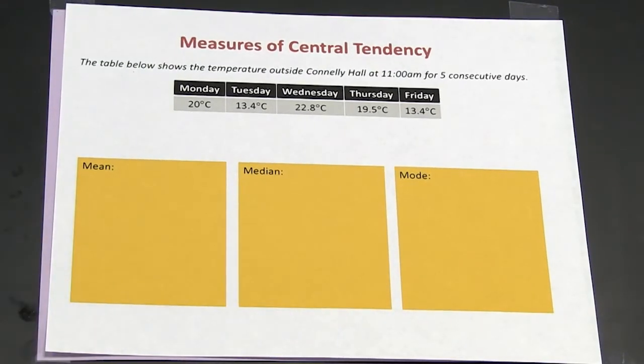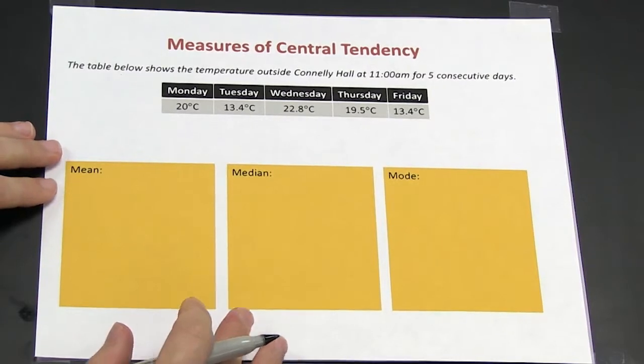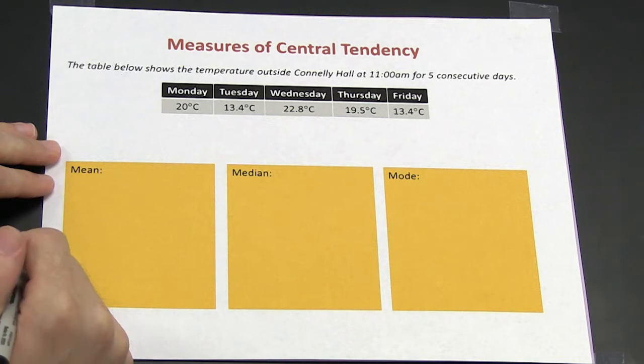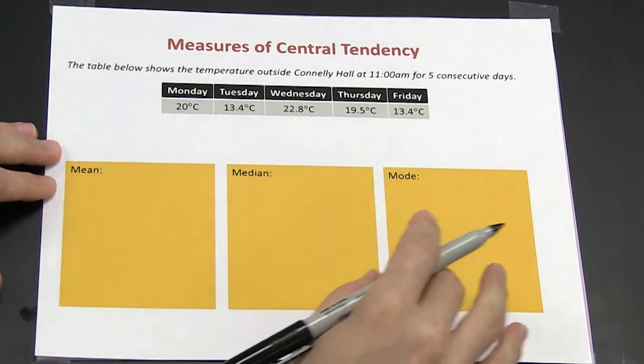So let's look at one example. This example is looking at the temperature outside of Connelly Hall for five consecutive days. I can calculate the mean, median, and mode.